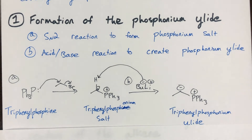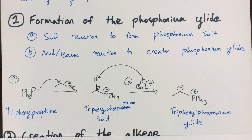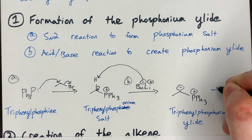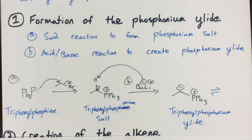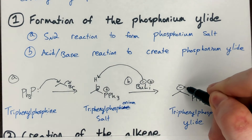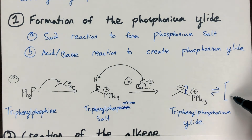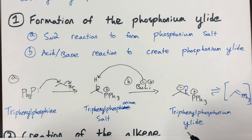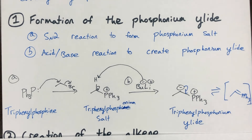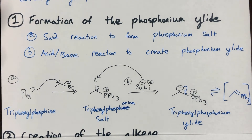Using a very strong base like butyllithium, you can remove that alpha proton and create the triphenylphosphonium ylid. The resonance stabilization is the driving force for the acidity of that alpha proton — the resonance structure shows the phosphorus forming a double bond to carbon. Phosphorus is below the second row, so it can have an expanded octet. We usually keep the charged form to illustrate the nucleophilic nature of the carbon, which must be present for the mechanism.